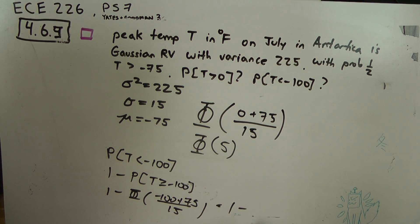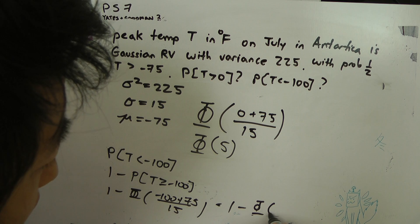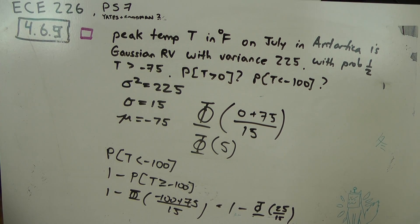Which is 1 minus phi of 25 over 15. And this number is also pretty small.